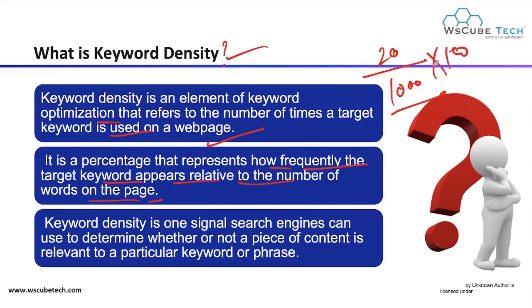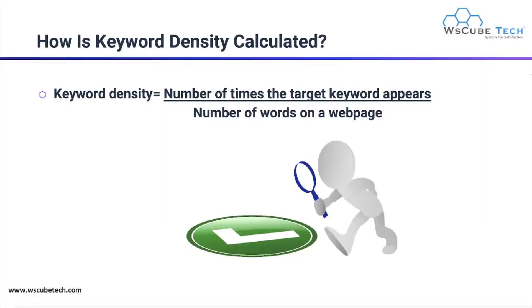If you multiply it by 100, you get the result as a percentage, and that percentage represents the frequency of the targeted keyword relative to the total number of words on the page. Keyword density is one signal search engines can use to determine whether or not a piece of content is relevant to a particular keyword or phrase.